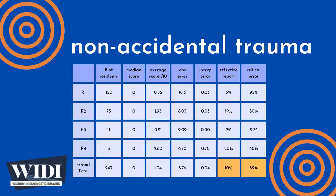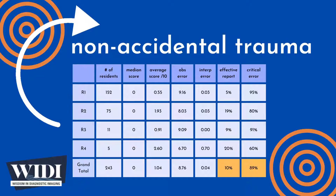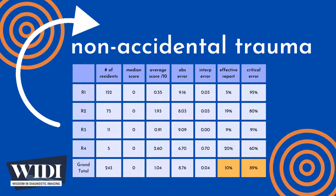We define a report having a critical error to be one with scores between 0 and 2. In terms of letter grades, this would be F and D. In this most missed case, 89% of residents produced reports with critical errors.